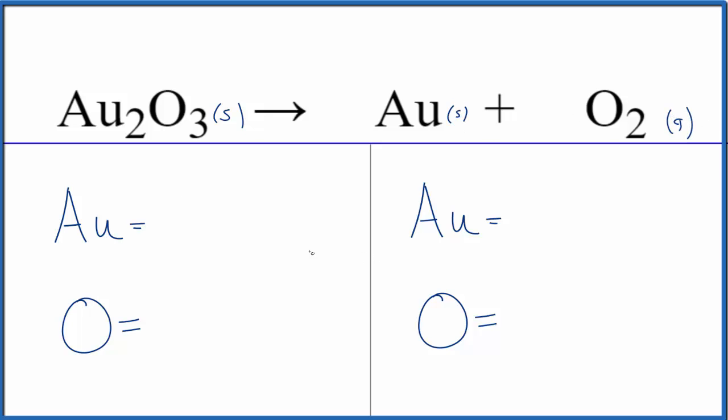So to balance the equation, let's count the atoms up. We have two gold atoms and three oxygen atoms. Product side, just the one gold atom and then the two oxygen atoms.